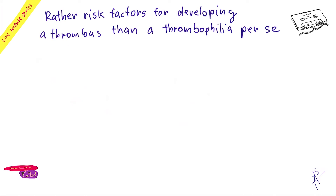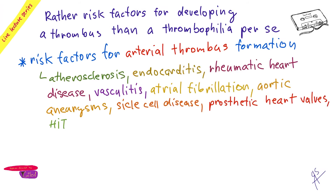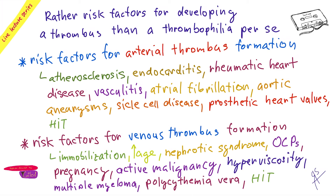For arterial thrombus, atherosclerosis is the main cause - plus endocarditis, which you can look up. With veins, the main acquired causes are immobilization and age itself. Also remember nephrotic syndrome - in nephrotic syndrome you lose antithrombin through the kidneys.